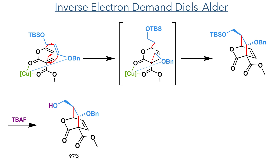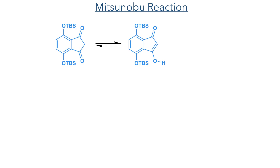With the cycloaddition complete, the TBS group was then removed using TBAF. In order to set the stage for the intramolecular Diels-Alder reaction, the authors needed to tether the indanone moiety to this molecule. This was carried out using a Mitsunobu reaction.